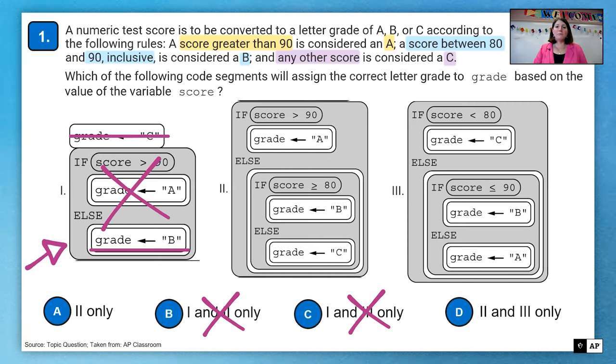So if we look at the code on two and three, question two, we see if it's greater than 90, we get an A. If it's greater than or equal to 80, we get a B. And otherwise, we get a C. That seems to match what I have highlighted in the question there. So we'll say that is one of the answers.